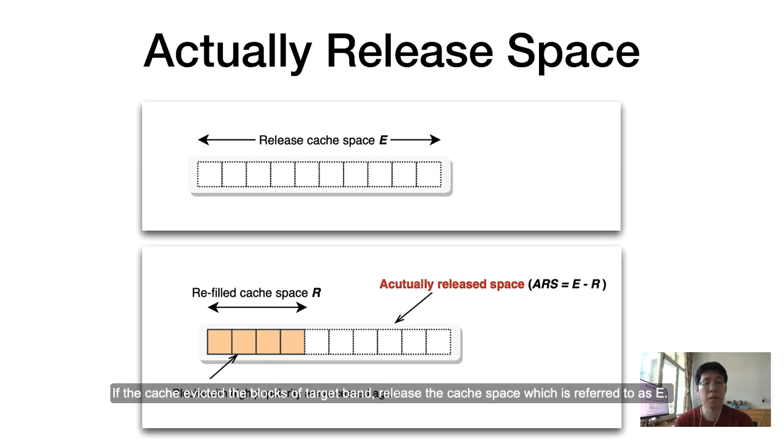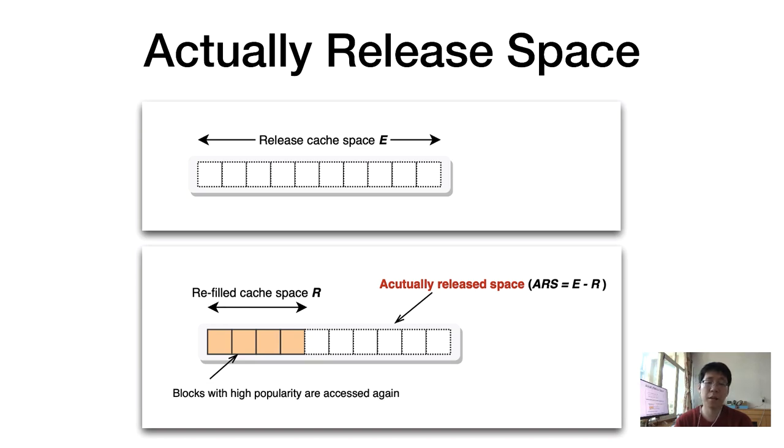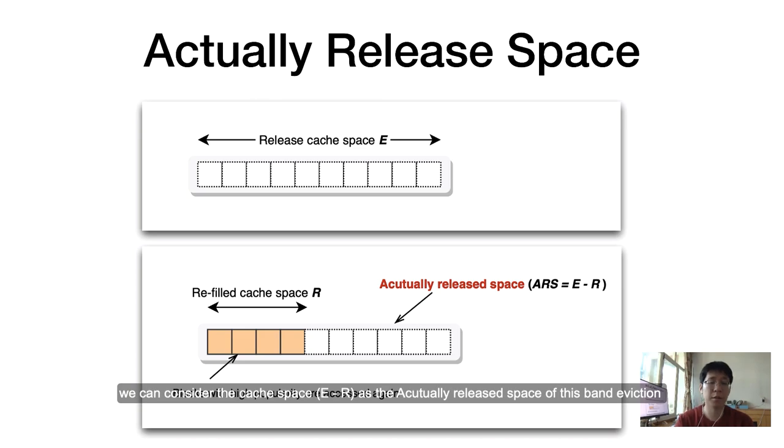Let's think about this. If the cache evicts blocks of a target band releasing cache space, referred to as E, part of these blocks have high popularity. They will be accessed again and refill the cache space, referred to as R. So we can consider the cache space E minus R as actually released space of this band eviction, which indicates how much eviction-free space can be used to cache new blocks. The larger the actually released space, the more new blocks needed to fill this space. And therefore, it leads to lower frequency to trigger eviction and fewer RMW numbers in SMR drive. In this way, we successfully transfer the problem of RMW trigger number to the selection of target band. Regarding the calculation method of the actually released space for each target band, we have discussed in our paper. I will not go into detail here.